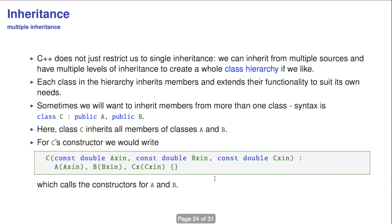That becomes particularly important if you use multiple inheritance. C++ does not just restrict us to a single inheritance. We can inherit from multiple sources, and have multiple levels of inheritance to create a whole class hierarchy if you like. Each class in the hierarchy inherits members and extends their functionality to suit its own needs. Sometimes we want to inherit members from more than one class, and the syntax would just be class C inherits class A and class B publicly.